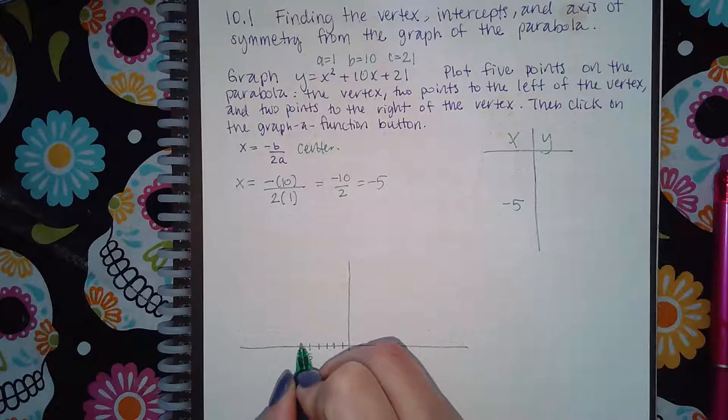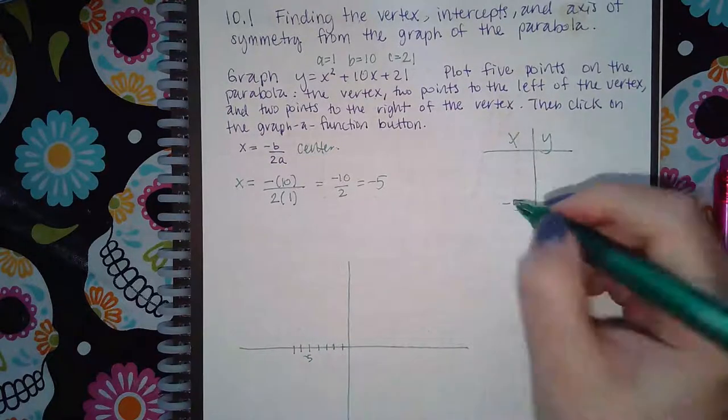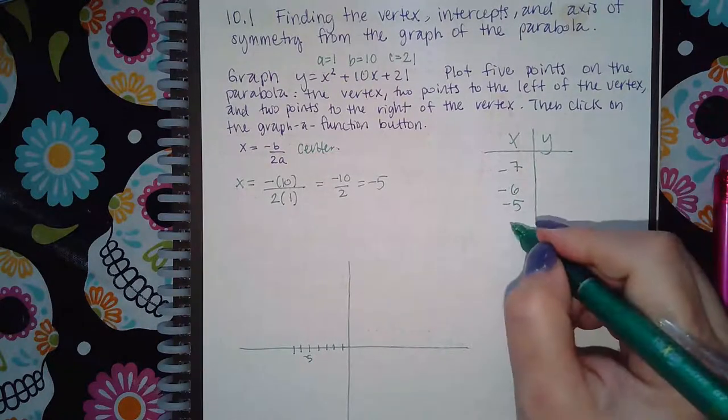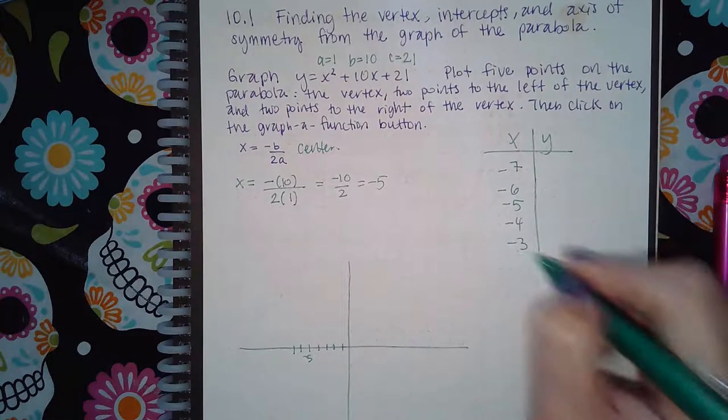Now I need two points to the left of negative 5, like negative 6 and negative 7, and then two points to the right of negative 5, like negative 4 and negative 3.